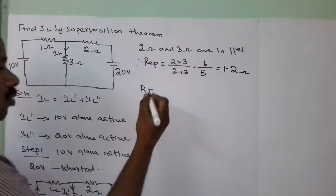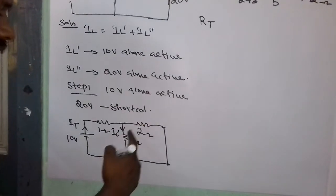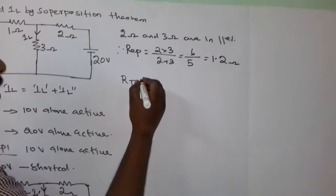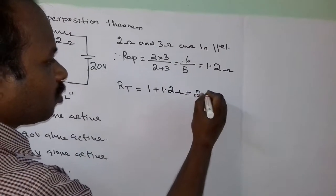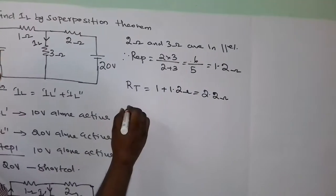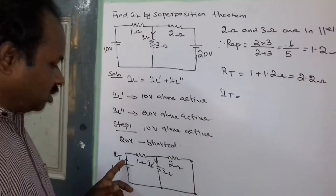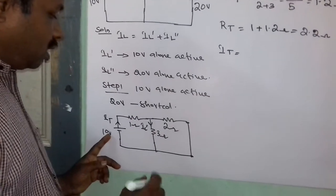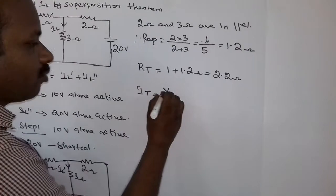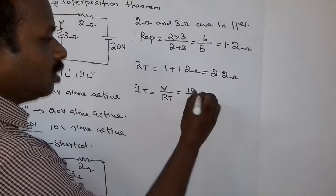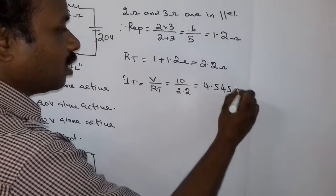Now we calculate the total resistance. Total resistance is 1 ohm plus R equivalent parallel. So RT equals 1 + 1.2 ohm, equal to 2.2 ohm. The total current IT equals V divided by RT, equal to 10 divided by 2.2 ohm, equal to 4.545 amps.